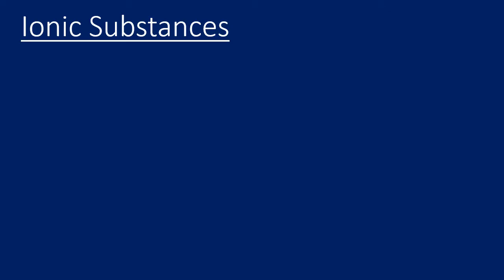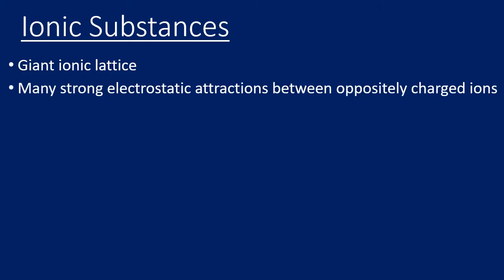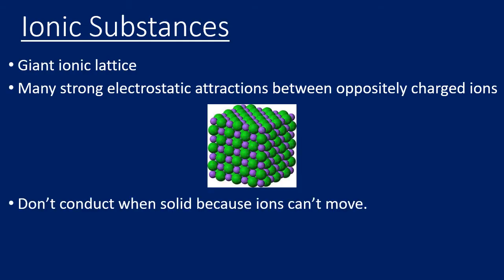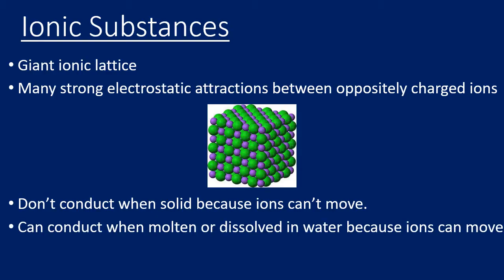A reminder from Unit 1 chemistry: ionic substances consist of a giant ionic lattice with many strong electrostatic attractions between oppositely charged ions, giving them high melting points. They do not conduct in solid phase because the ions are fixed and can't move. However, if you heat it until it's molten or dissolve it in water, the ions can move and it can conduct. Do not say movement of electrons — it is movement of ions that allows this.